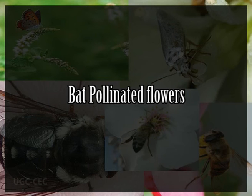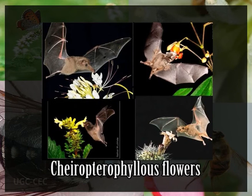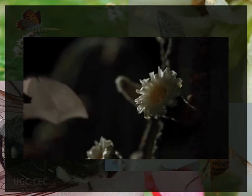Bat-pollinated flowers are called chiropterophilous flowers. These flowers are generally large and open only at night, usually dark colored but with a strong musky odor — the odor of bats — to which bats are attracted. About 130 genera of angiosperms are bat pollinated, for example Kigelia, Durio, Erythrina, and Adansonia.